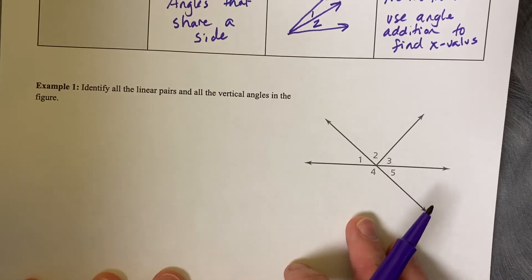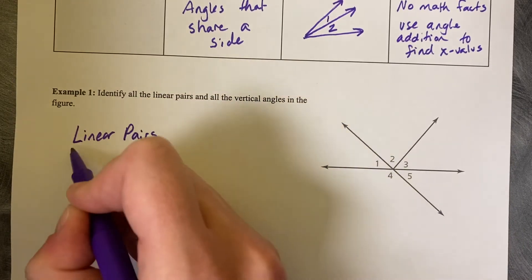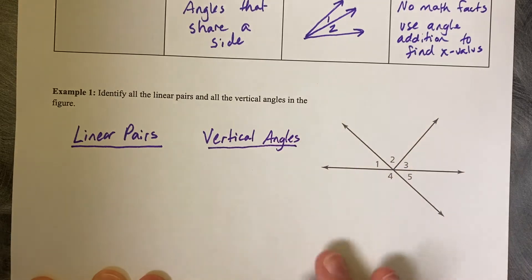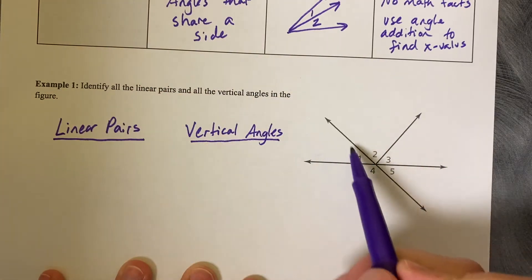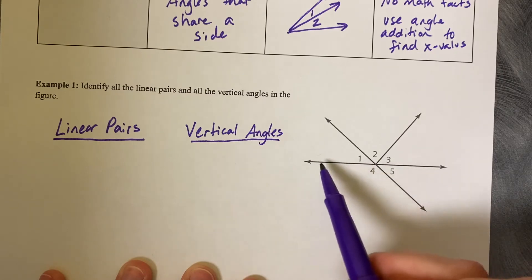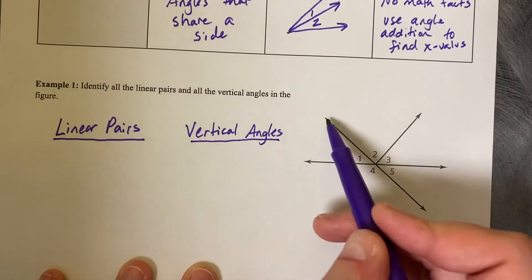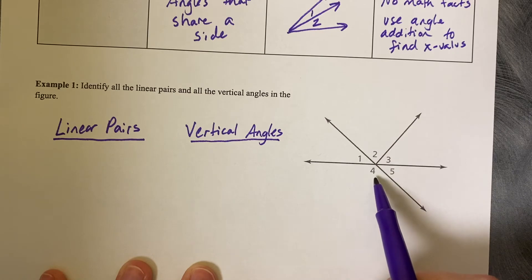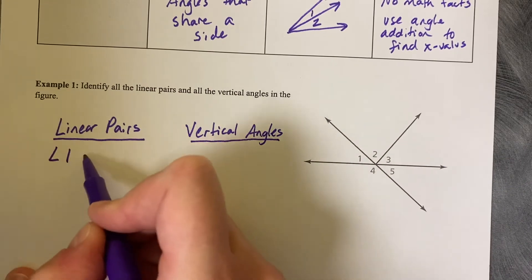Example 1: Identify all the linear pairs and all the vertical angles in the picture. We're going to find linear pairs and vertical angles. Looking at the diagram, I'm looking for straight lines — I see two of them. Looking along the first line, angles one and four lie along that line. One is acute and one is obtuse, looking like about 80 degrees and 100 degrees. So one linear pair is angle one and angle four.